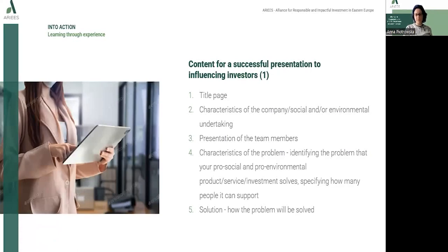First we start from the title page, then we move to the characteristics of our company and social environmental undertaking. Then we need to present our team members from their best side, and we need to focus on the characteristics of the problem — identifying the problem that our pro-social or pro-environmental product, service or investment is going to solve, and specifying how many people it can support.